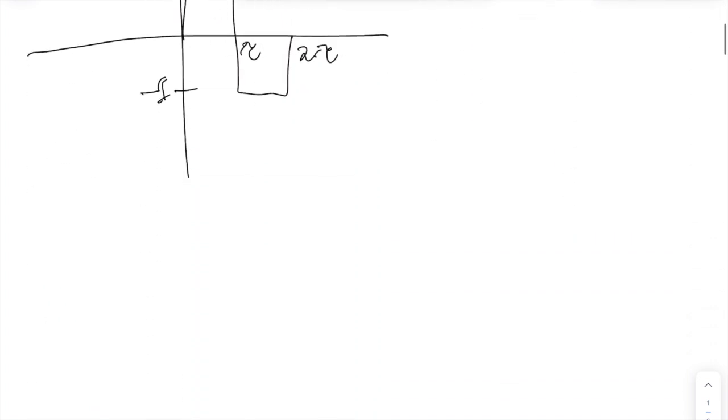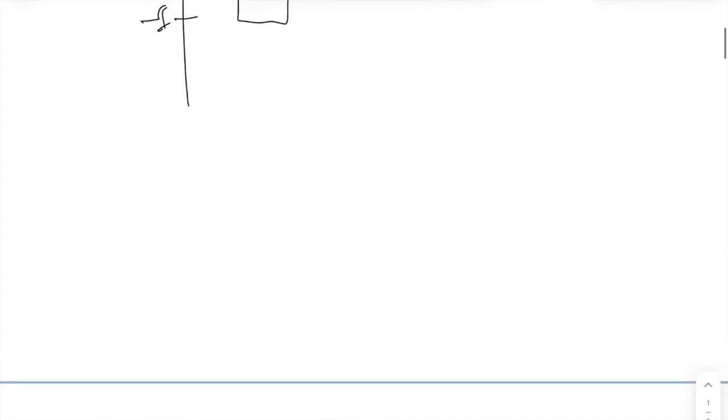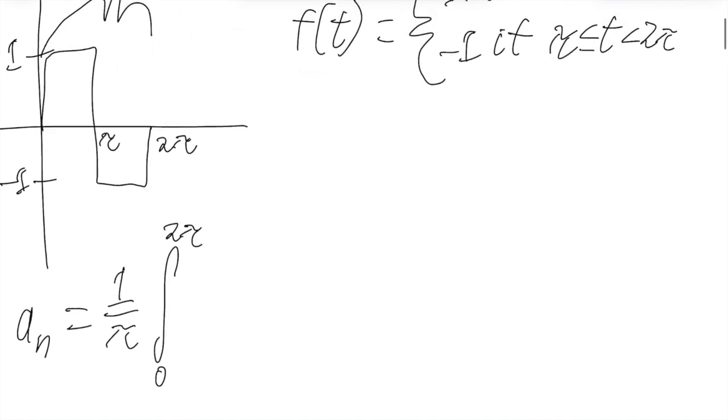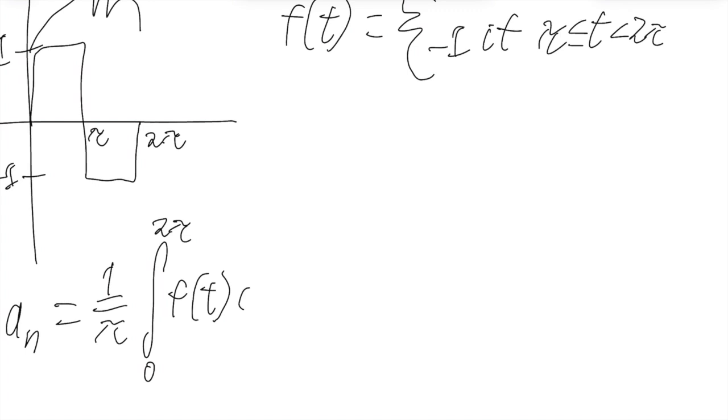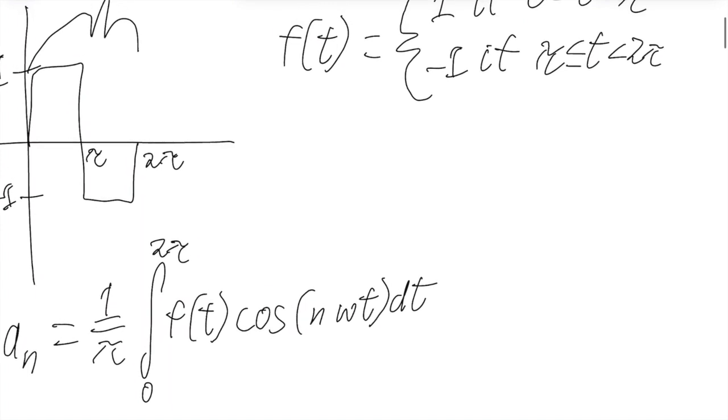So now we can move on to a_n and b_n. So a_n will equal 2 over 2π or 1 over π times integral from 0 to 2π of f(t) times cosine of n omega t dt. And the key here is that we can split this integral up into two parts because of this piecewise.